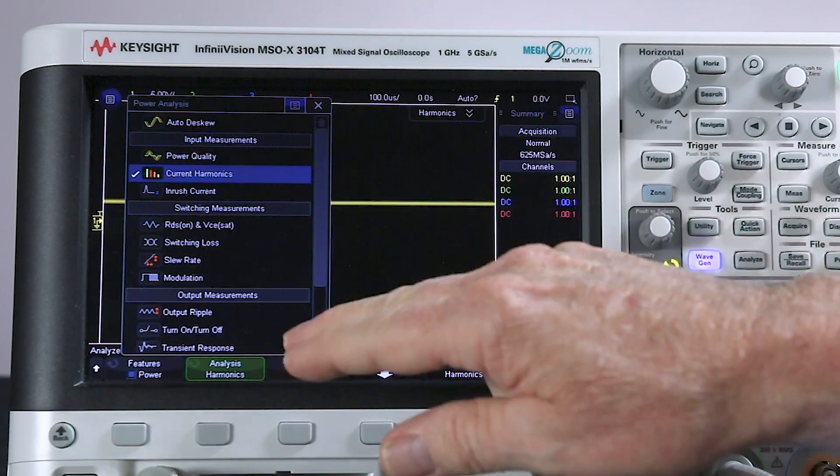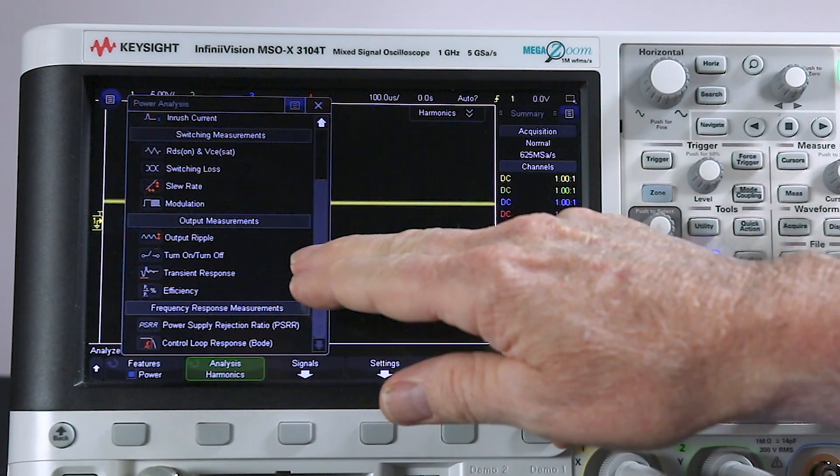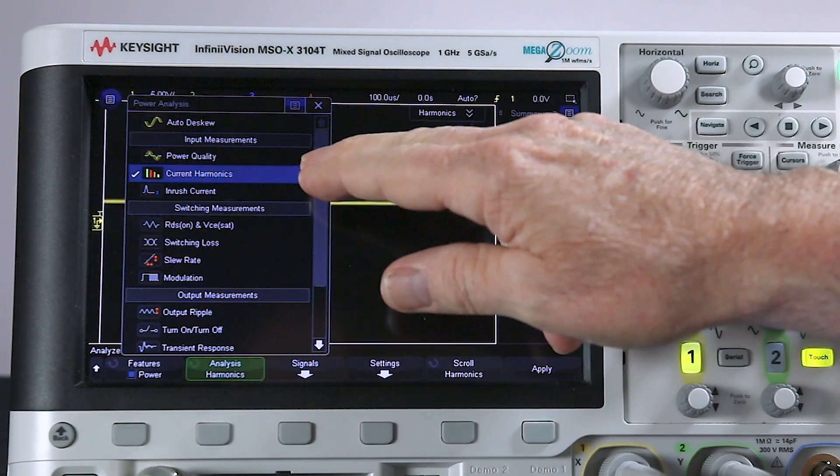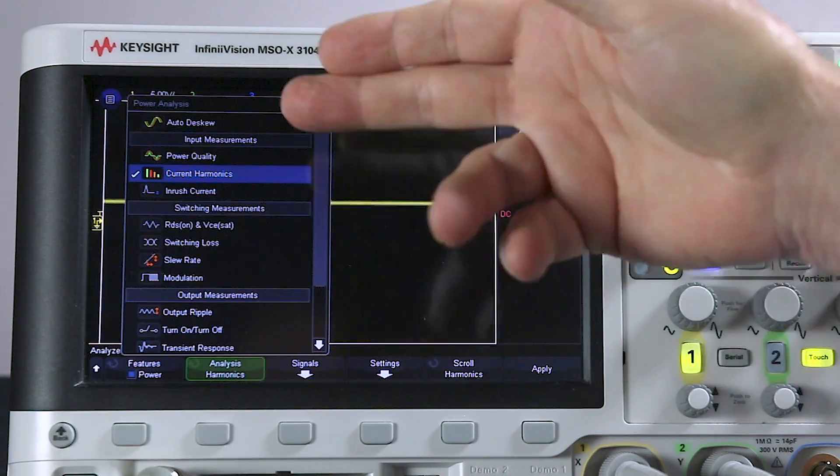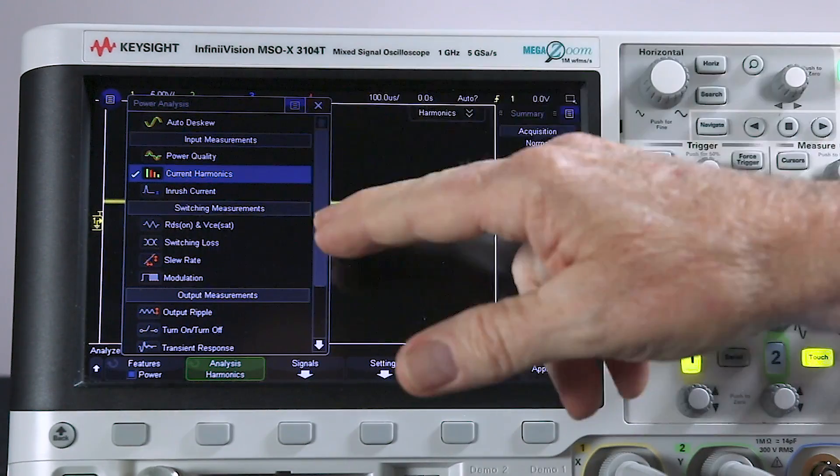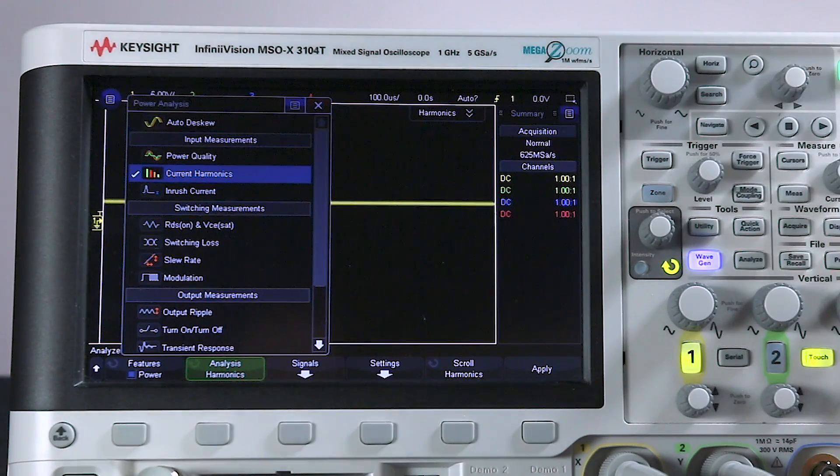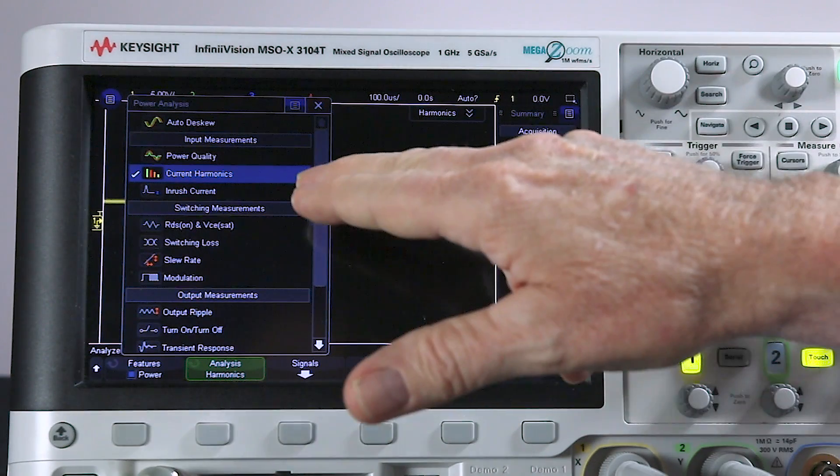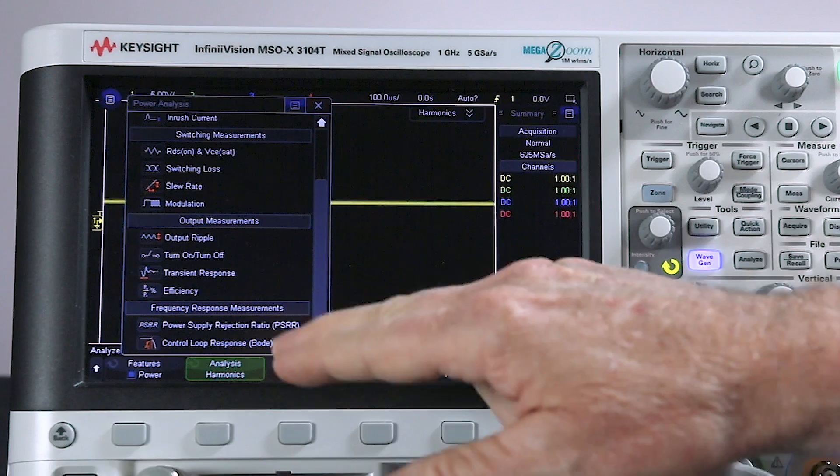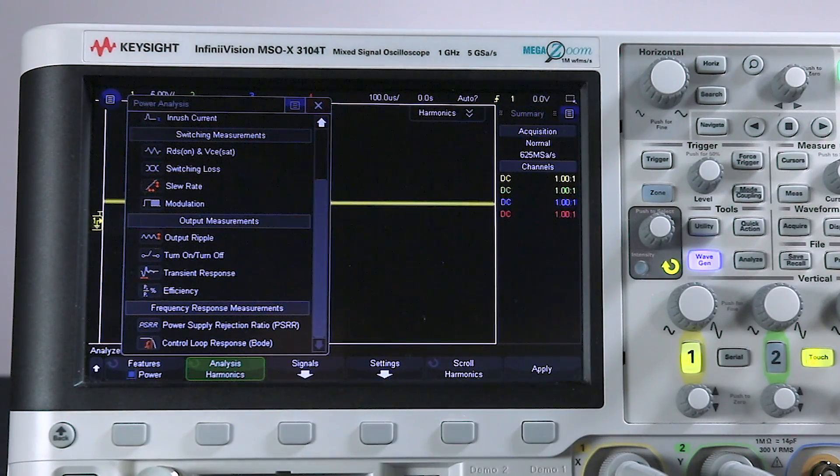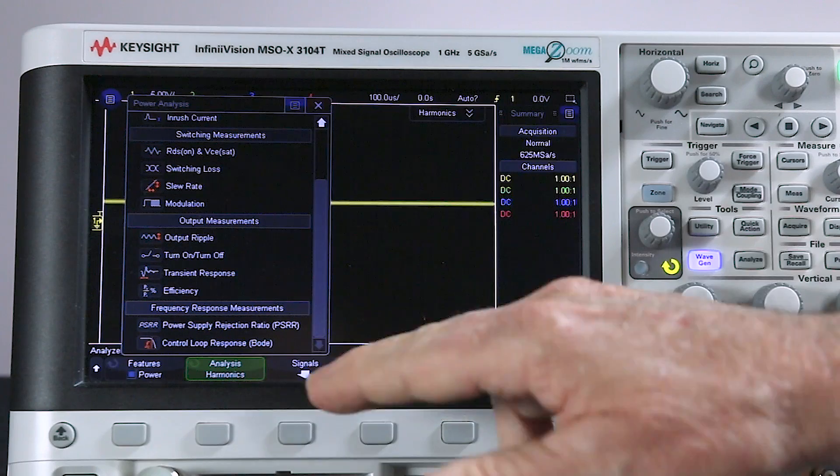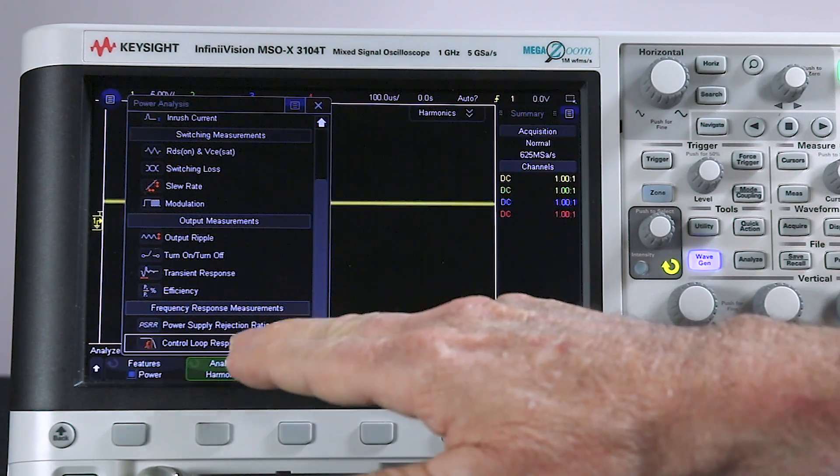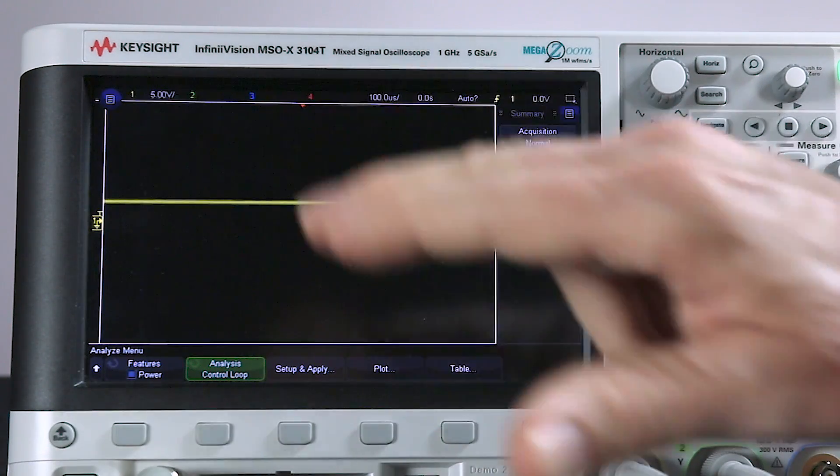Under the Analysis key are all the various power measurements that you can perform with the power options, such as power quality, current harmonics, RDS on, switching loss, and so on. Now, we have videos on all of these, so I encourage you to go watch those if you're interested. Now, down here at the bottom are two frequency response measurements, power supply rejection ratio, and control loop response or Bode plot. I'm going to select Control Loop Response.